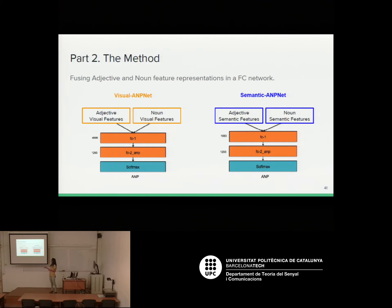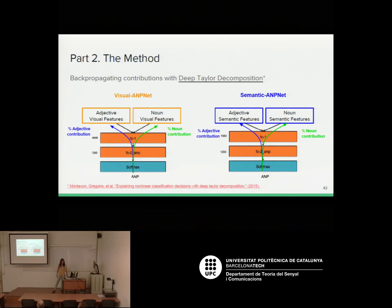After some pre-processing, these features are fused in a fully connected network. Depending on whether the features come from the visual or semantic representations, we differentiate between two networks: the Visual AMP Net and the Semantic AMP Net. For the contribution study, we propagate contributions in the final ANP class decision to see which features — from adjectives or nouns — contribute most. For this we use the Deep Taylor Decomposition technique, a state-of-the-art method presented this year at an ICML workshop. It is a simple and easy-to-apply technique that fit our problem well.